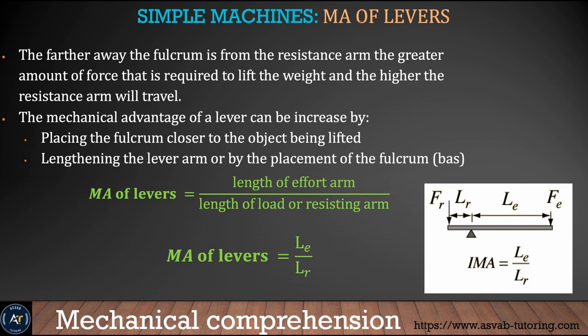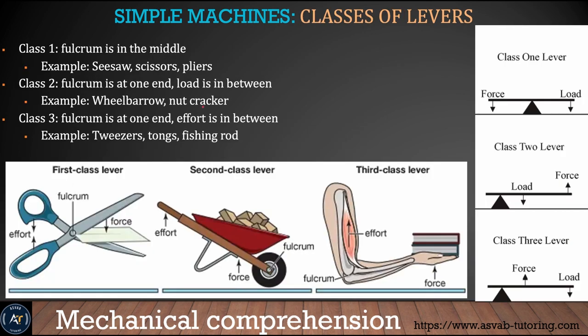The mechanical advantage of a lever is the length of the effort arm over the length of the load or resisting arm. You can see here what is called the effort arm and what is called the resisting arm. The lever class is determined by the fulcrum location and the load.